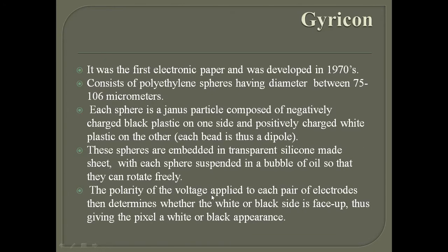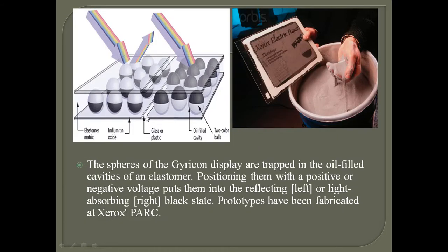These spheres are embedded in a transparent silicon sheet, with each sphere suspended in a bubble of oil so they can rotate freely. The polarity of the voltage applied to each pair of electrodes determines whether the white or black side is face up, giving the pixel a white or black appearance. This technology gave Gyricon its paper-like appearance.